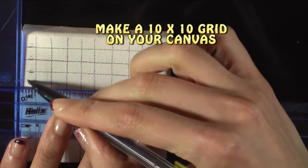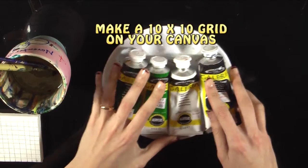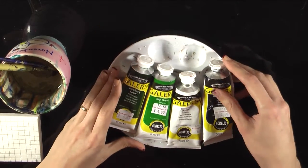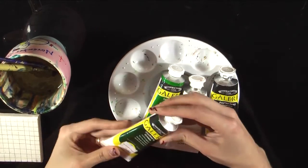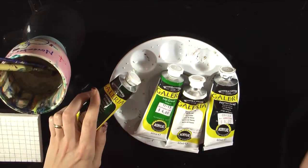So once you have your grid drawn out, let's go ahead and mix our paint colors. We're only using four different colors to do our creeper, and it's going to be acrylic paint. We have a hooker's green, a sap green, a titanium white, and a paint's gray.